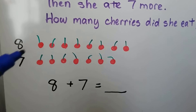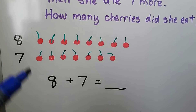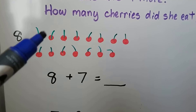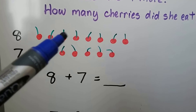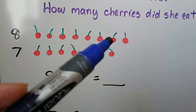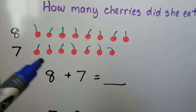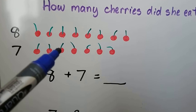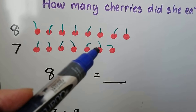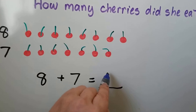There are 8 cherries and 7 cherries. 8 plus 7 is 1, 2, 3, 4, 5, 6, 7, 8, 9, 10, 11, 12, 13, 14, 15 cherries.